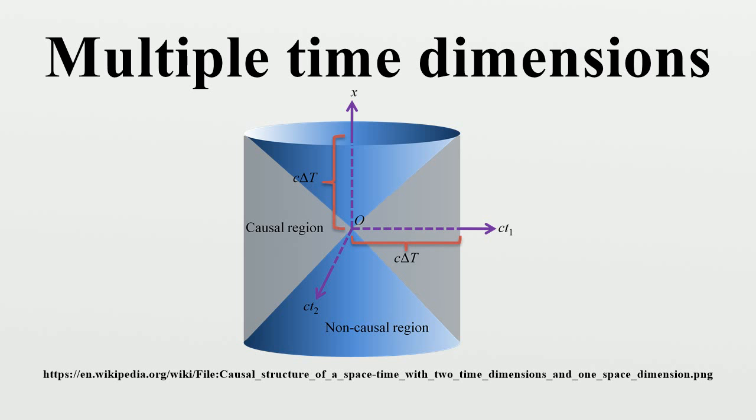The hypertime dimensions called eternity and hyparxis are said to have distinctive properties of their own. Eternity could be considered cosmological time or timeless time. Hyparxis is supposed to be characterized as an ableness to be and may be more noticeable in the realm of quantum processes.